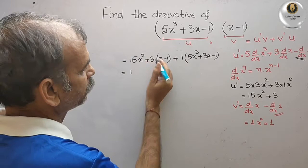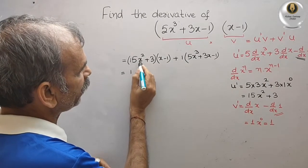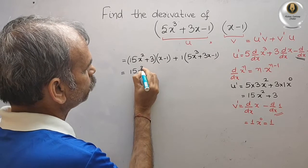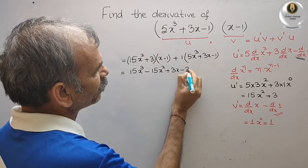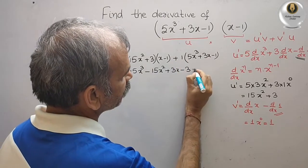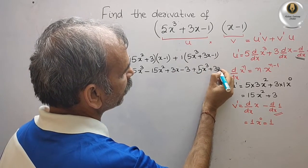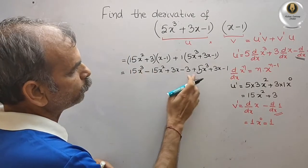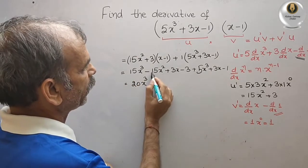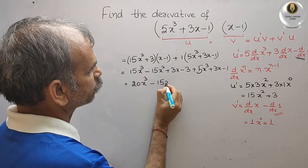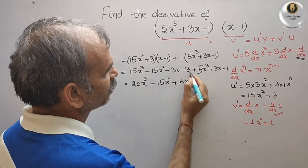Expanding: (15x² + 3)(x - 1) gives 15x³ - 15x² + 3x - 3, and adding (5x³ + 3x - 1). Collecting like terms: 15x³ + 5x³ = 20x³, then -15x² remains, 3x + 3x = 6x, and -3 - 1 = -4. So the final answer is 20x³ - 15x² + 6x - 4.